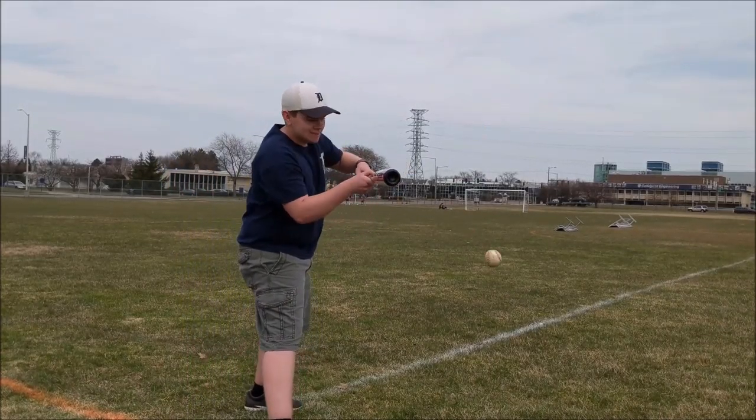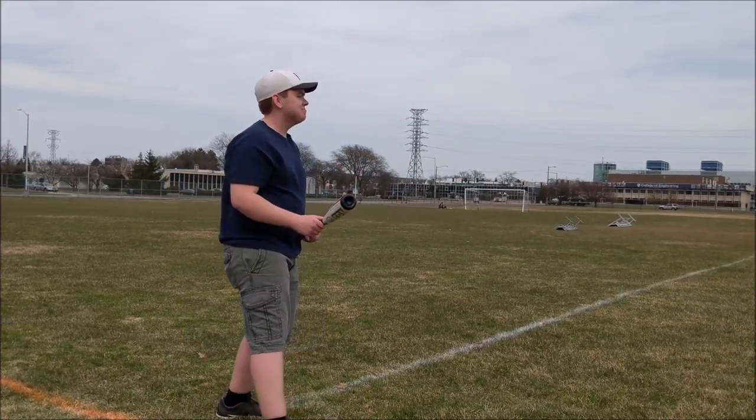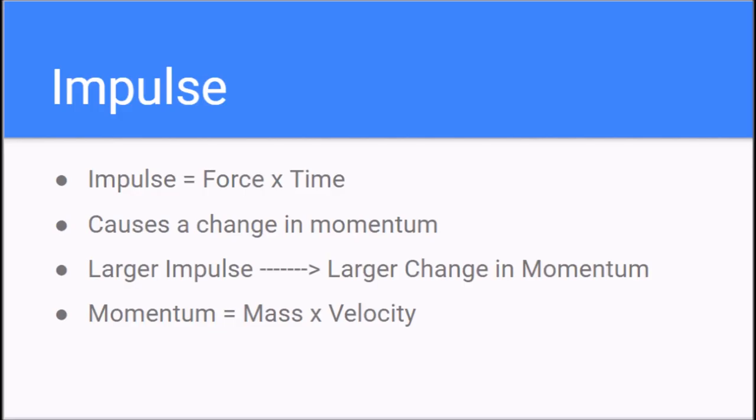Then we have a few examples of bunting the ball. Notice how the ball that is swung at leaves the bat with a much greater velocity than the ball that is bunted.